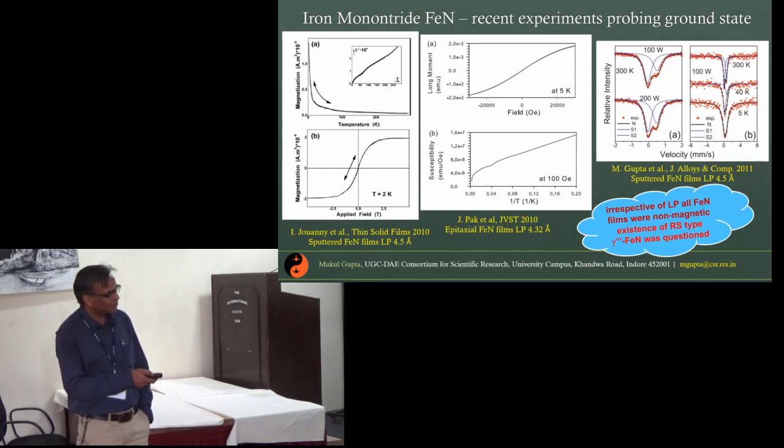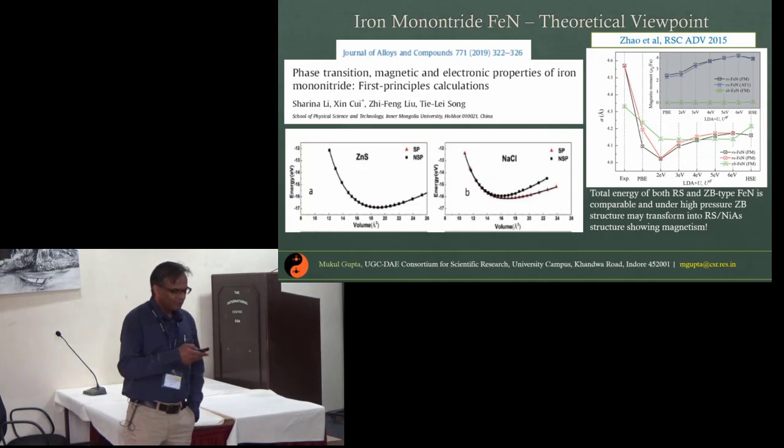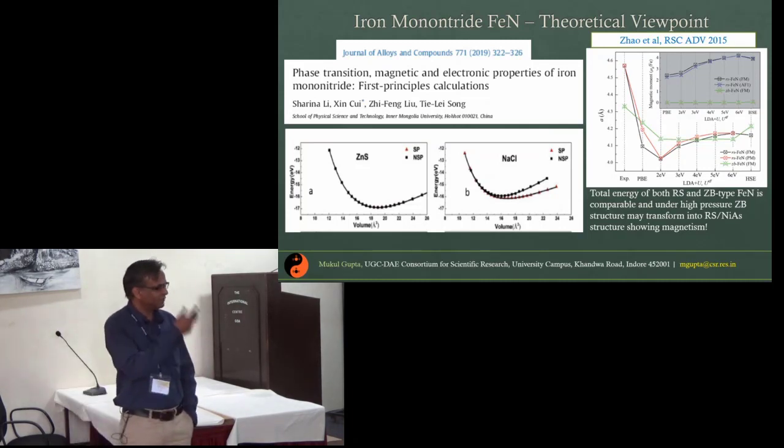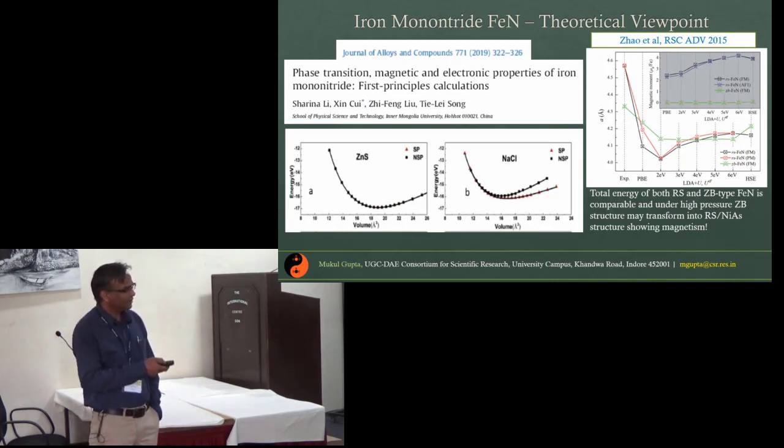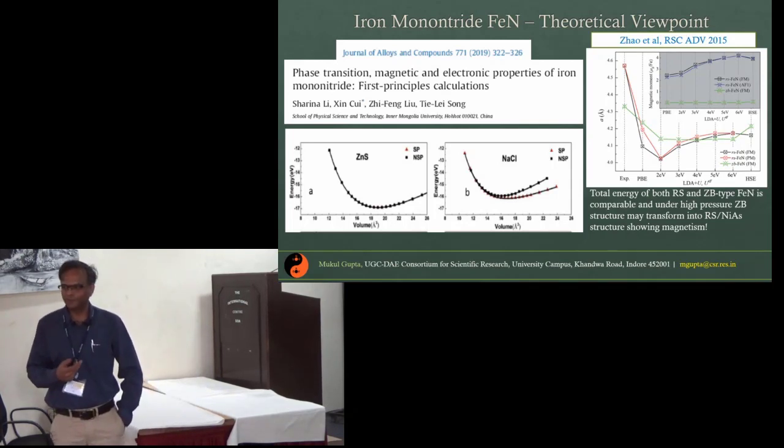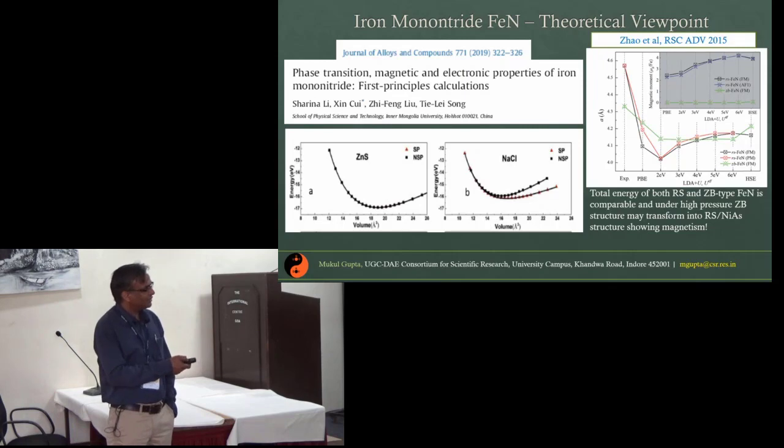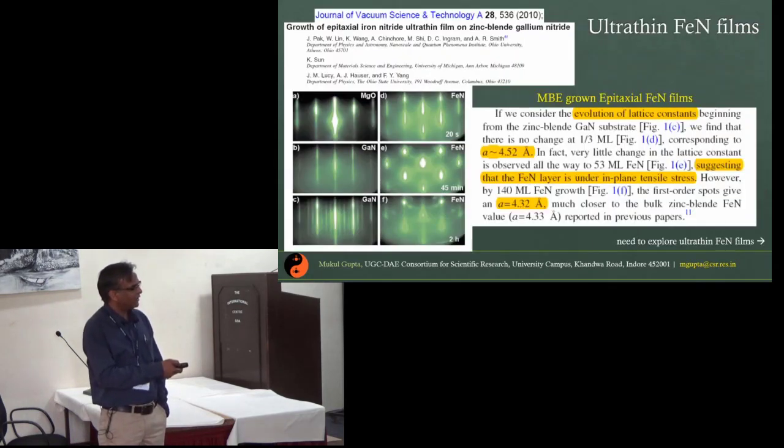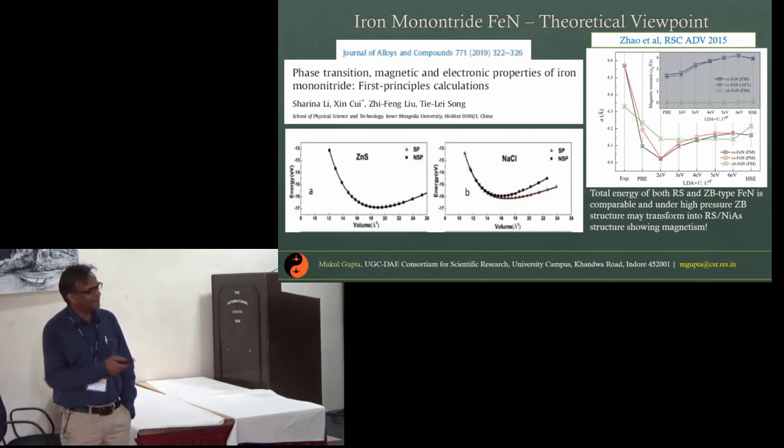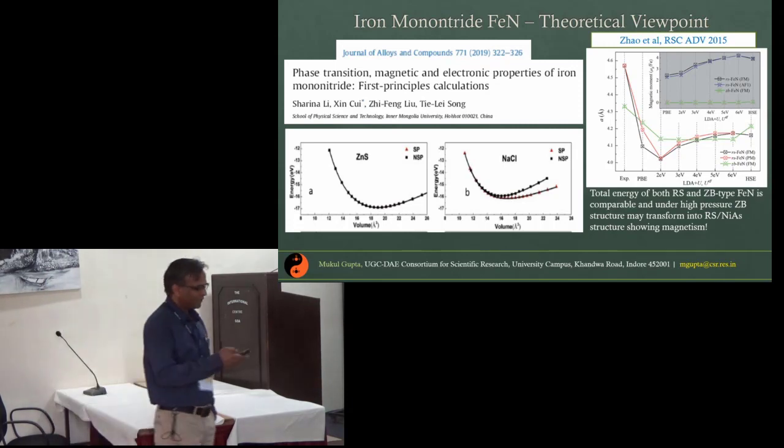The existence of this rock salt type structure was questioned. But if you see theoretically, even recent work shows that the probability of existence of both these phases, zinc blende as well as rock salt, is almost equal. The thing is that zinc blende type structure will remain non-magnetic for any given lattice parameter or volume, but FeN in the rock salt type structure should have a magnetic ground state and it follows high moment high volume predictions.